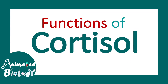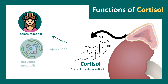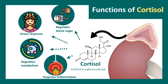Cortisol has different types of functions. One of the major ones is the stress response, which is why it's also known as a stress hormone. It regulates metabolism — almost all types of metabolism are regulated by cortisol. It's a potent suppressor of inflammation, which is why it's also used as an immunosuppressant. It also regulates blood glucose level, basically increasing it, and it has an anti-insulin activity.